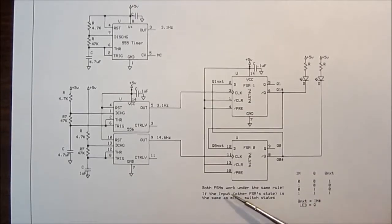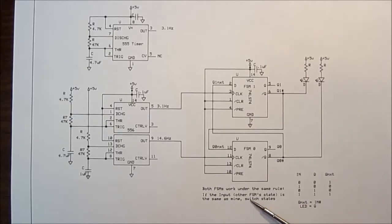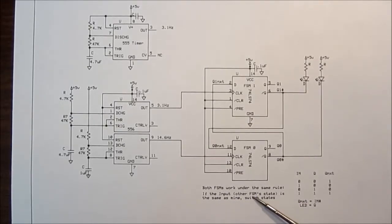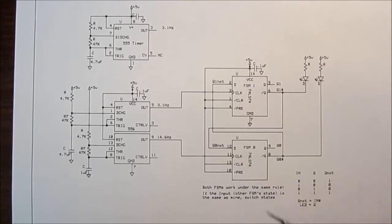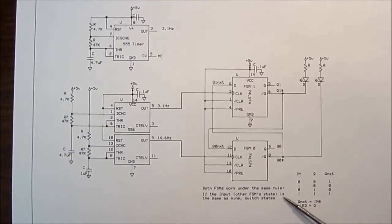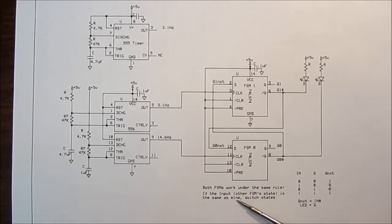Essentially both state machines work under the same rule. If the input, which is the other state machine state, that's the input to each state machine is the other one's state, that's input variable. If that input variable is the same as my state, then switch states.